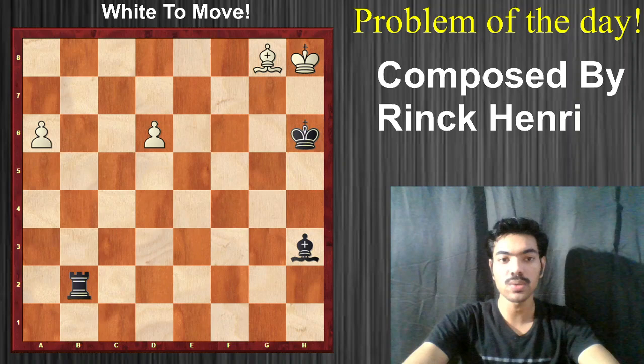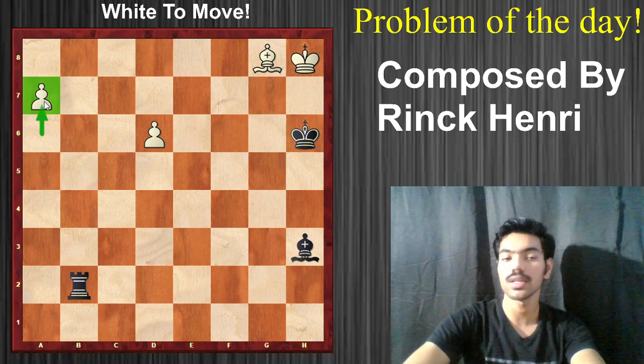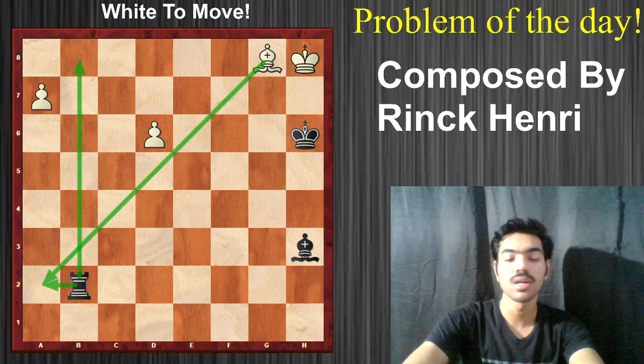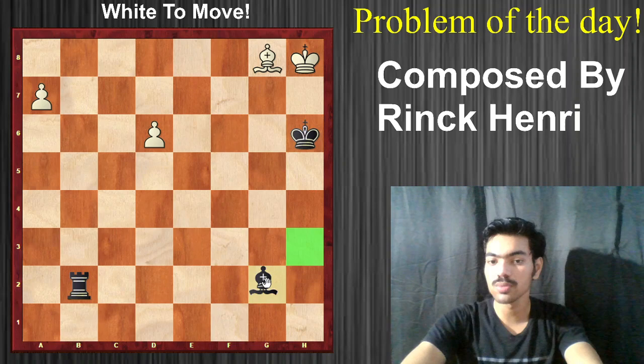The move that white should start with is pawn to a7. Our obvious threat is to simply go forward and promote the pawn. Can black stop it with his rook? Not really, because the b8 square as well as the a2 square has been covered by the pawn and the bishop. So basically a rook cannot stop it, but the bishop can — so the bishop goes to g2.